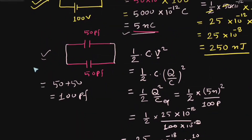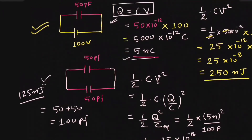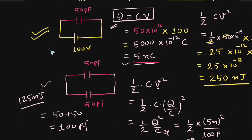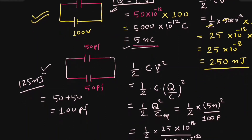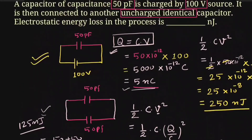The electrostatic energy of this combined system is 125 nano joule, while the electrostatic energy of the first capacitor alone was 250 nano joule. So the energy loss during this process equals 250 minus 125, which is equal to 125 nano joule. That is our answer.